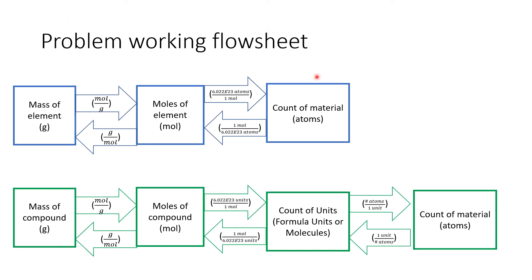I've put together a flow sheet here to hopefully help you out. This is more of an algorithmic solution that I like to use. I would rather you work out what's going on behind the scenes and figure this out from dimensional analysis, but it looks like from homework 6 folks are having some trouble, so I thought I would layer in some help to try to get you there.